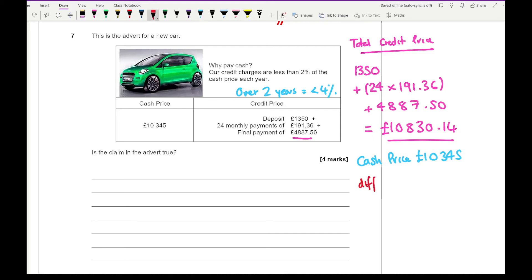The difference is £10,830.14 minus £10,345, all divided by the original which is £10,345, multiply by 100. That comes up to 4.68%. So we can say that no, the claim is false, as 4.68% is greater than 4%.